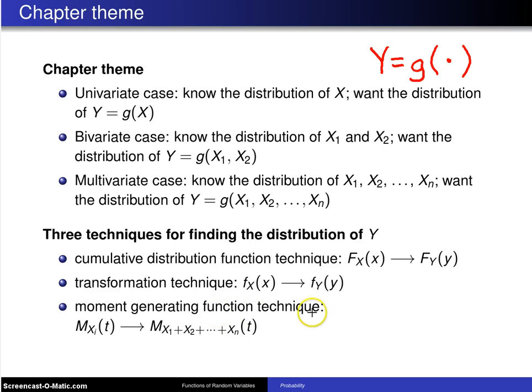Finally, the moment generating function technique goes from the moment generating function of the individual observations to the moment generating function of their sum or of their linear combination. So, this is a very well-organized chapter. It won't seem quite as splintered as some of the other chapters, but the roadmap will help you get through and see at what point in the process we're at.